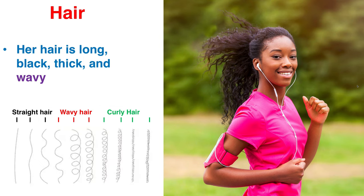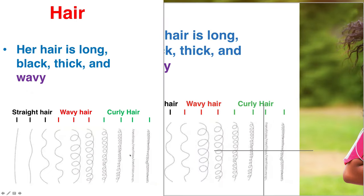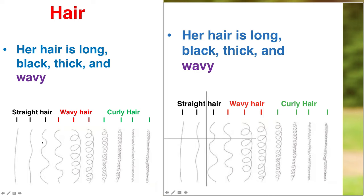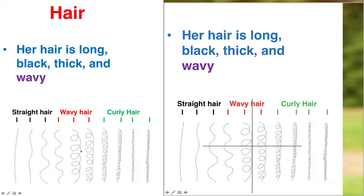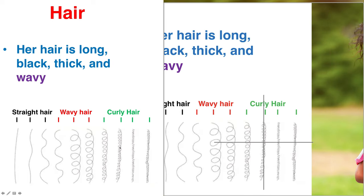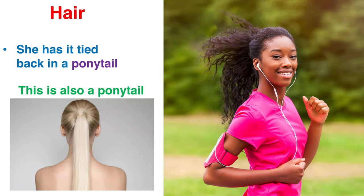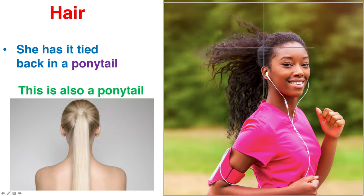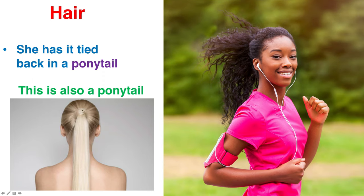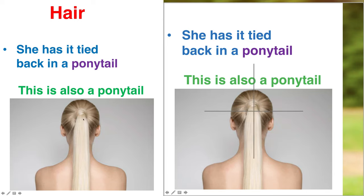What words did you use to describe her hair? You could say her hair is long, black, thick, and wavy. Straight hair looks like one style, wavy hair has a gentle wave pattern, and curly hair curls tightly. Another detail you can add is that her hair is tied back in a ponytail — like the tail of a horse. Here is another example of a ponytail with blonde straight hair.